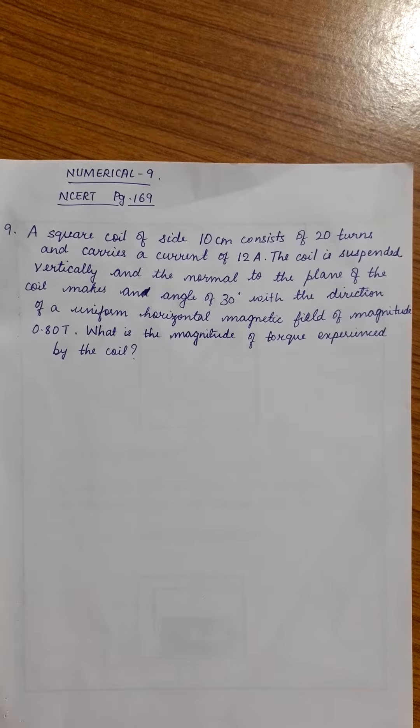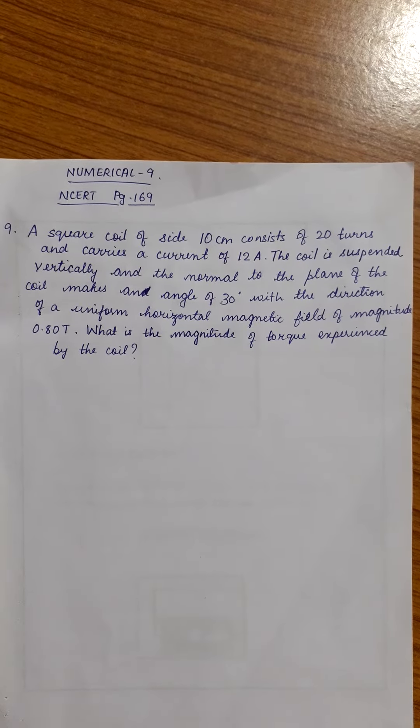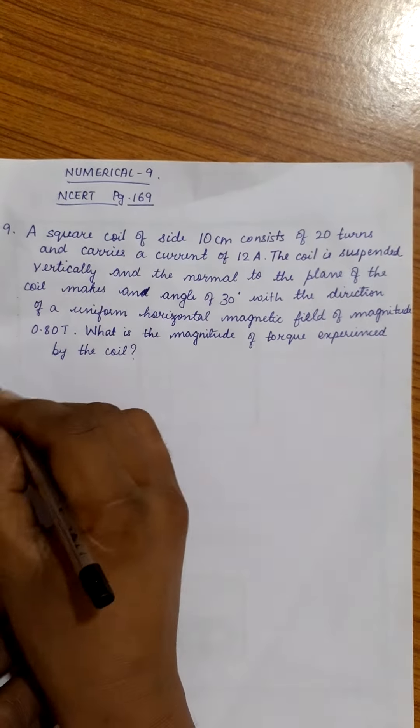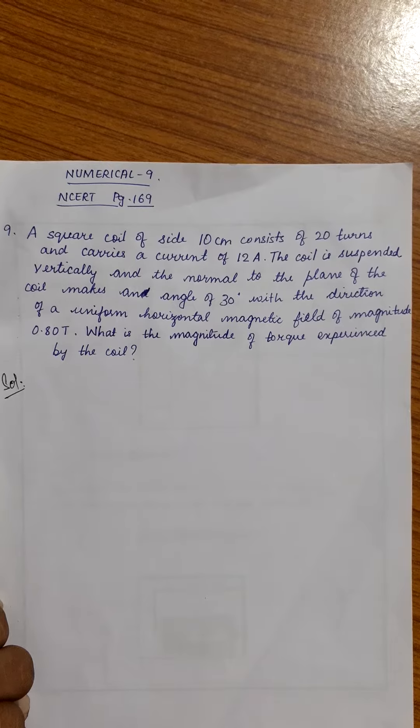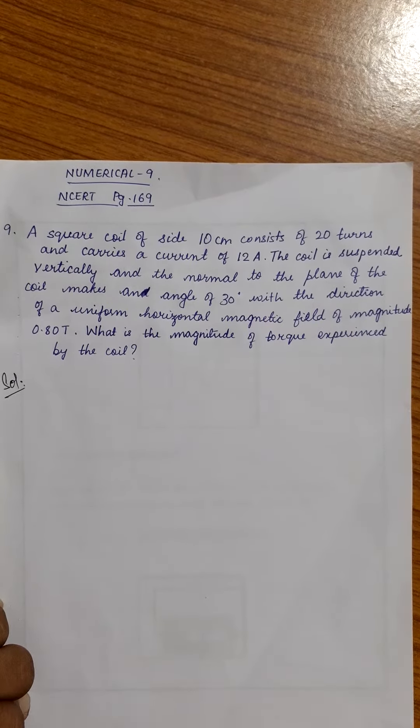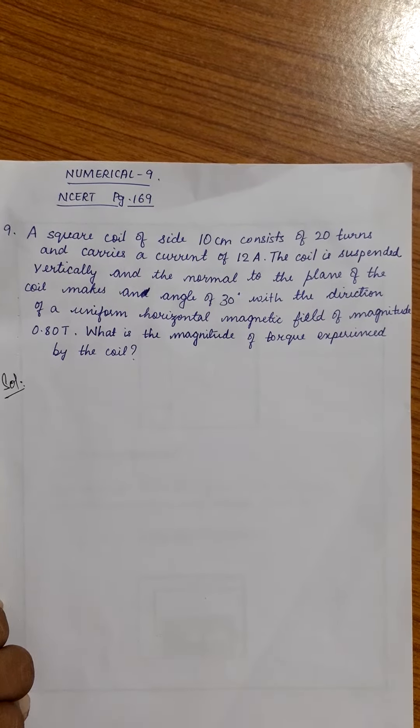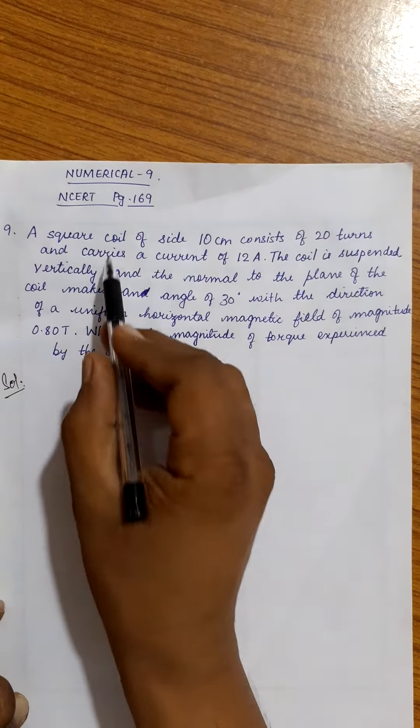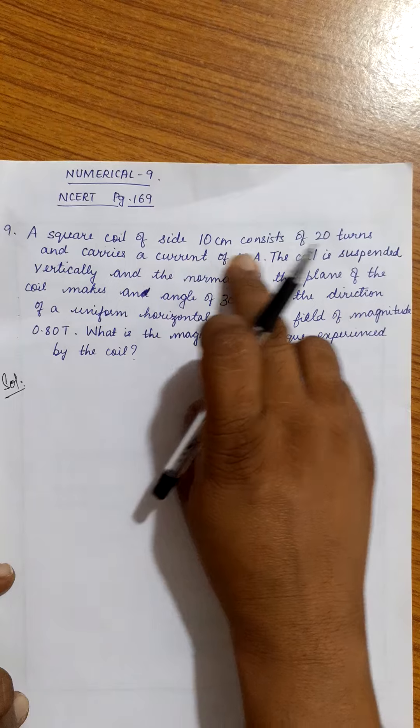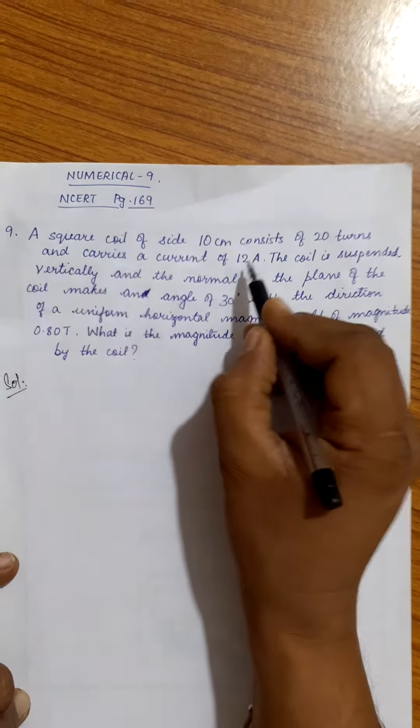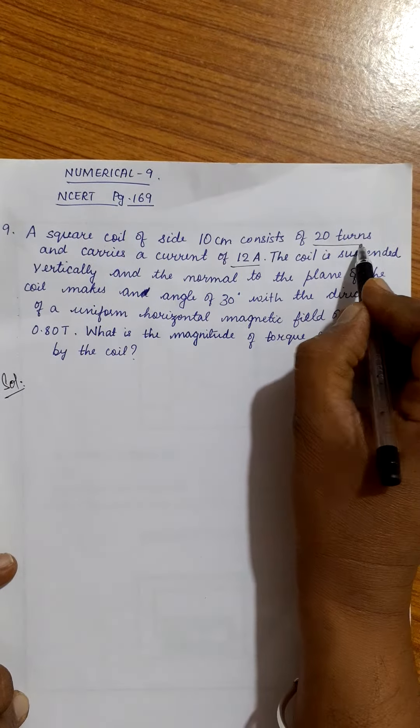In this question, there is a square coil of side 10 centimeter that consists of 20 turns and carries a current of 12 ampere. Square coil of side 10 centimeter, it carries 12 ampere and consists of 20 turns.